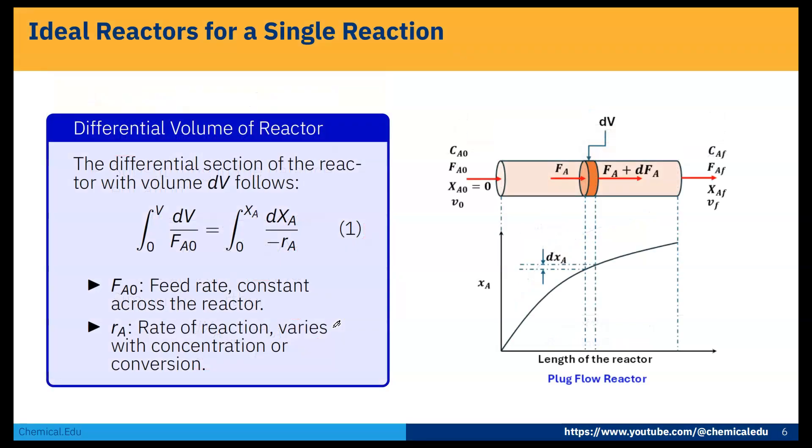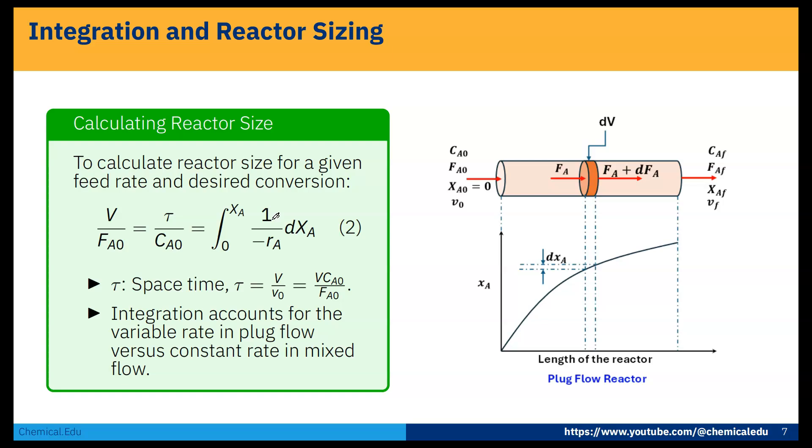Now here, the differential section of the reactor with volume dV follows. If we do the integration: zero to V, dV by FA0 is equal to zero to XA, dXA over minus rA. FA0 is feed rate constant across the reactor. rA is the rate of reaction, varies with concentration or the conversion.